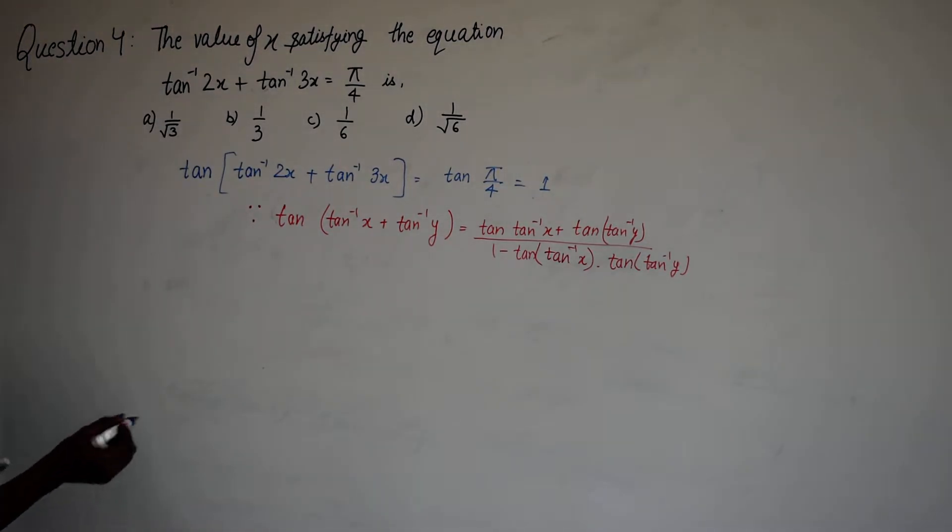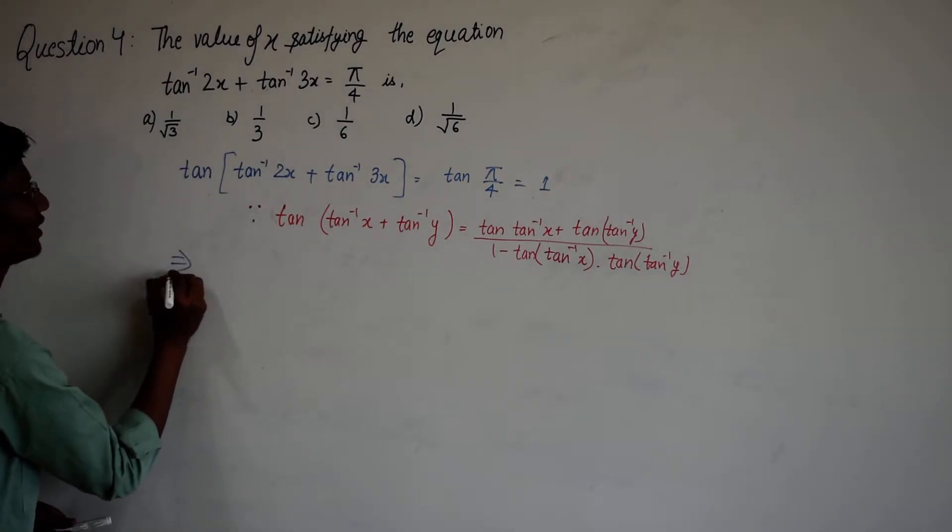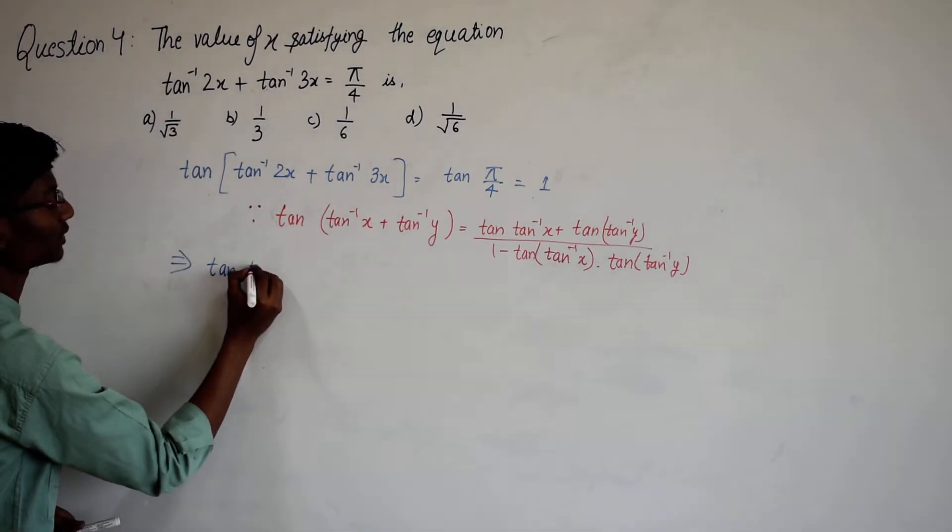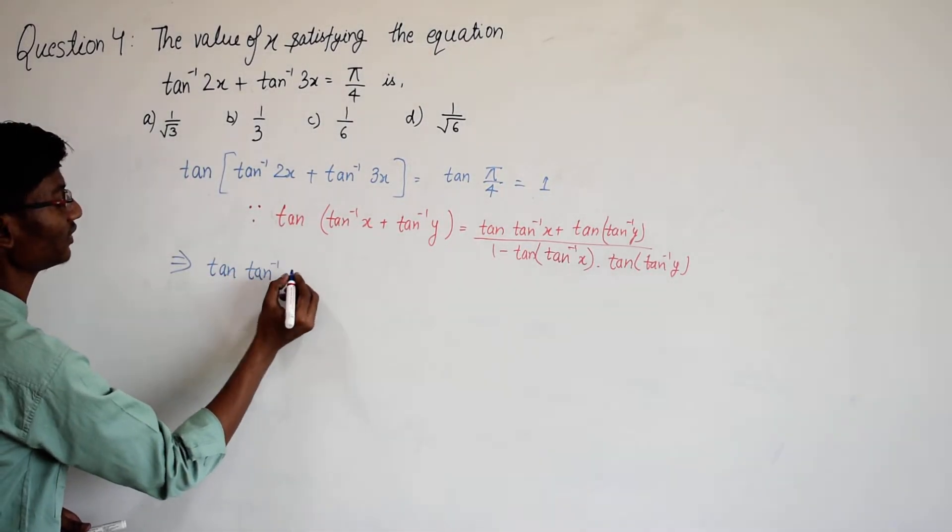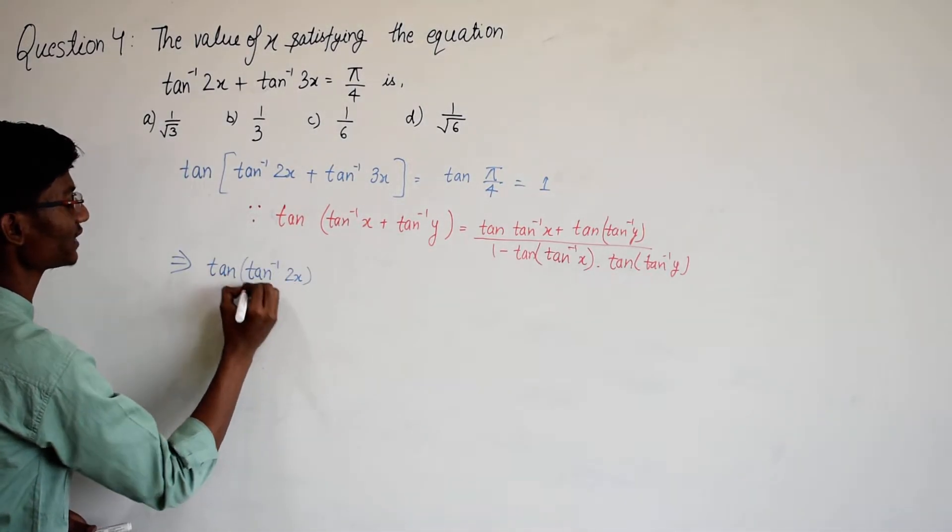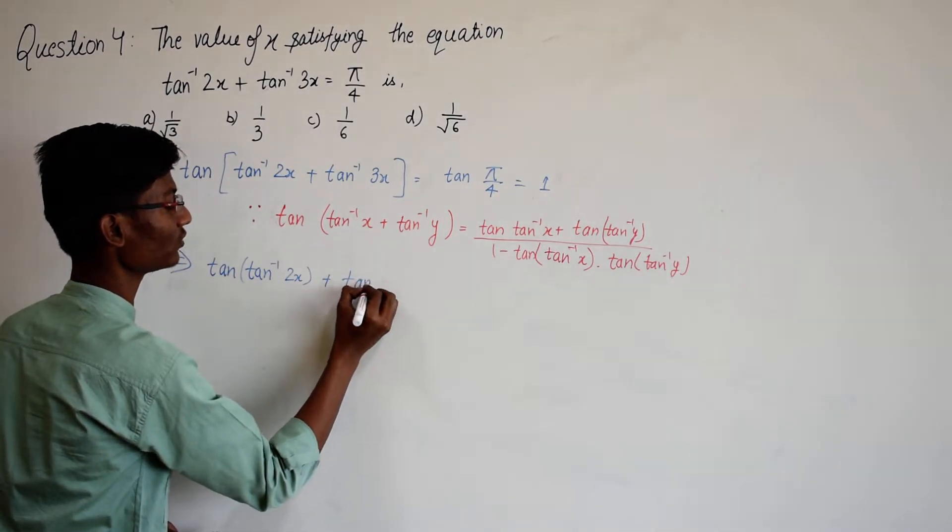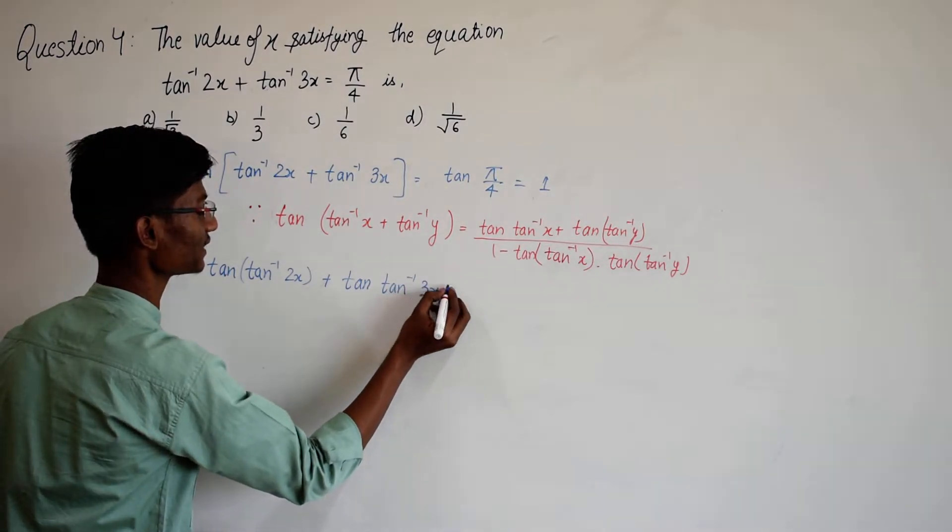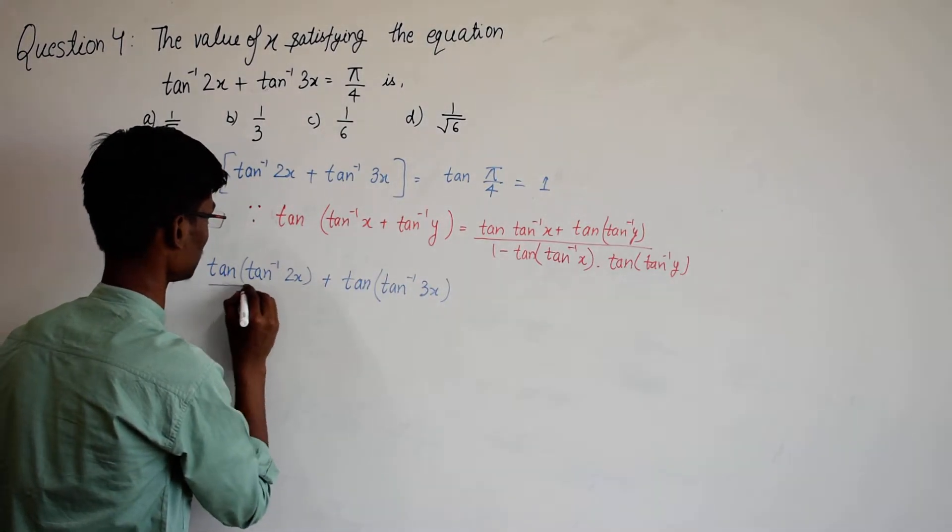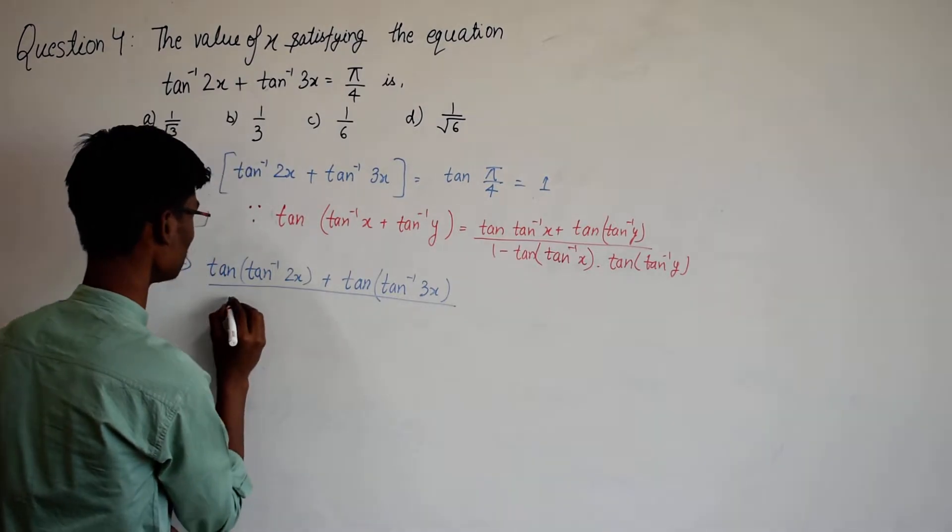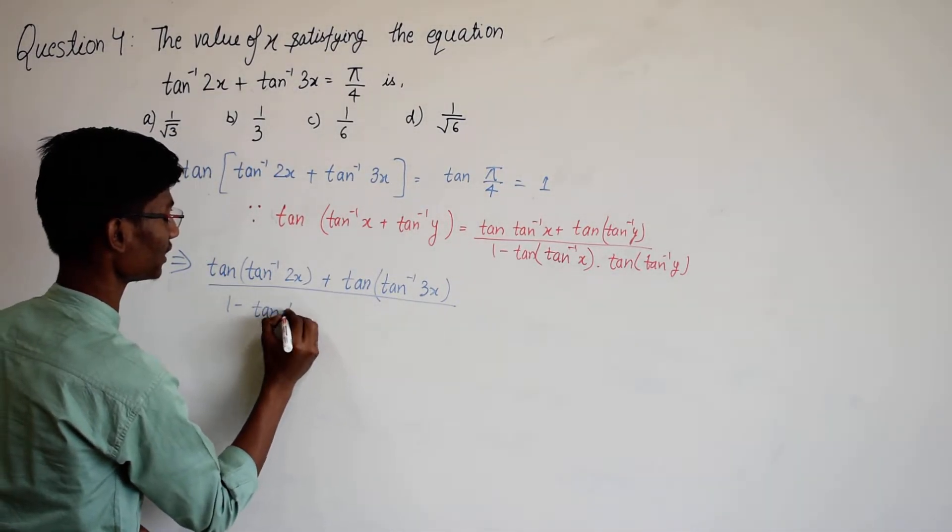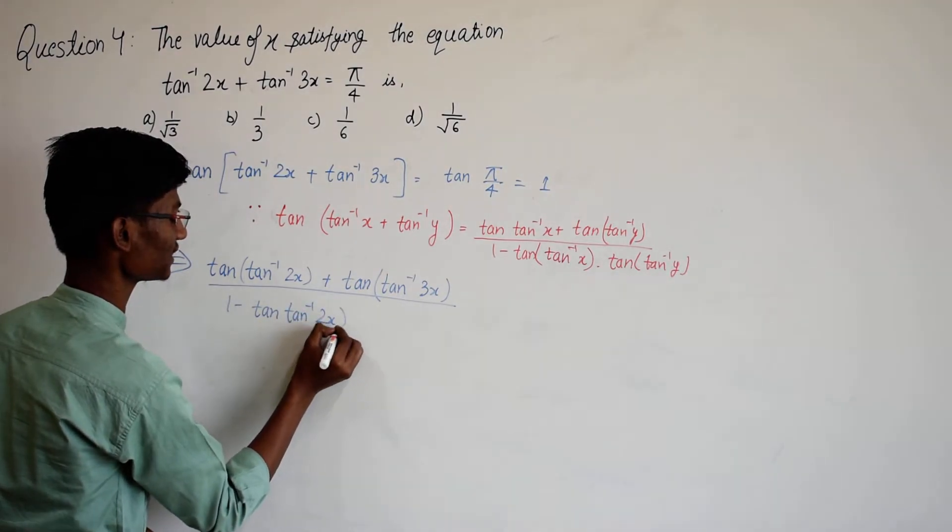So we will apply this identity to the left hand side of our equation. We will get tan of tan inverse 2x plus tan of tan inverse 3x divided by 1 minus tan of tan inverse 2x.